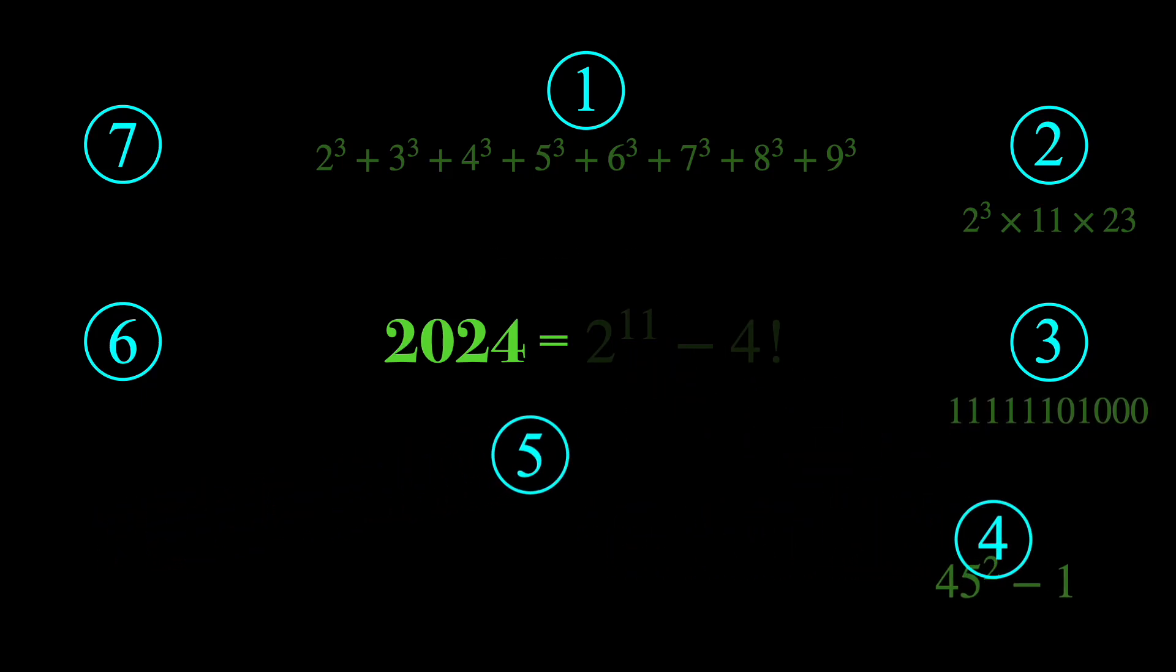The fifth curious fact is that 2024 equals 2 to the 11 minus 4 factorial.